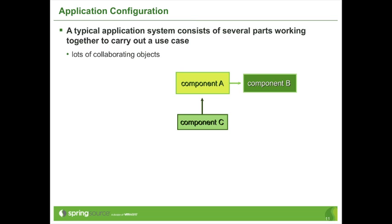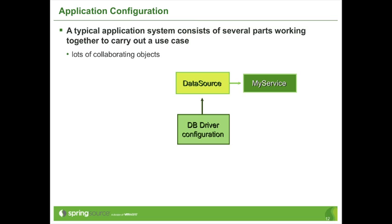Let's look at a slightly more realistic layering. Instead of Component A, B, and C, imagine we've got a service — as you very often will — and that it requires a data source, and that data source requires configuration information. That graph is already three objects deep, and you don't want to have to repeat that recipe for creating those objects all over the place. It's best to have that extracted into a single configuration definition and then be able to reuse it in a portable way.